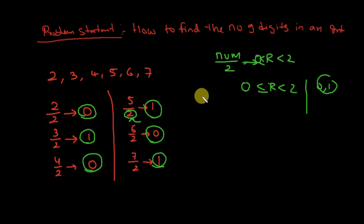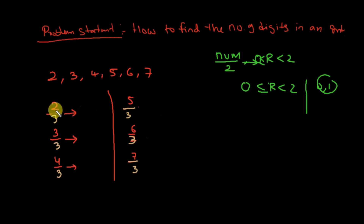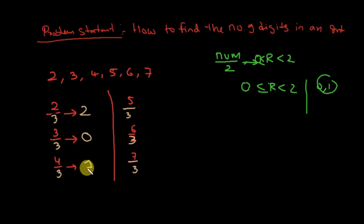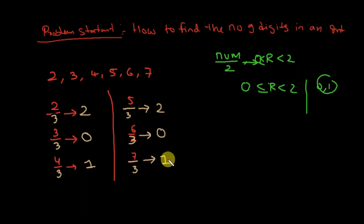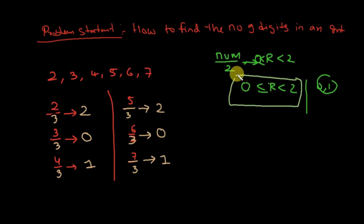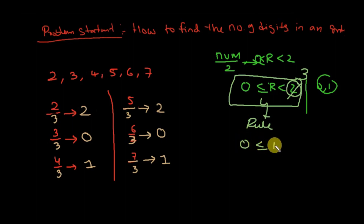Now I'll repeat the same question for divisor 3. If we divide 2 by 3, the remainder is 2. If 3 is divided by 3, the remainder is 0. If 4 is divided by 3, the remainder is 1. The observation is: all remainders obey the same rule — they are 0, 1, or 2, i.e., less than 3.